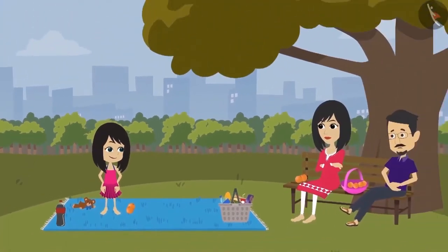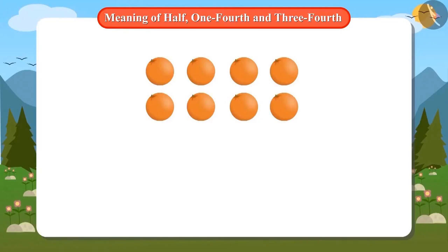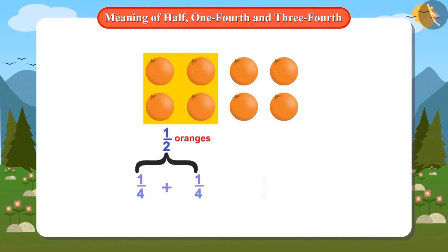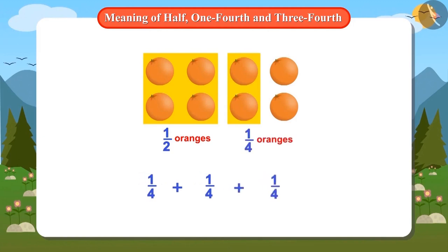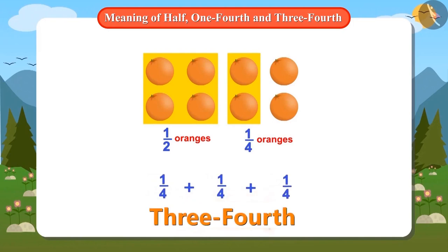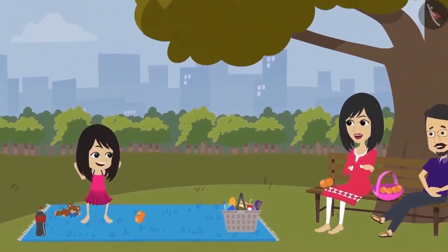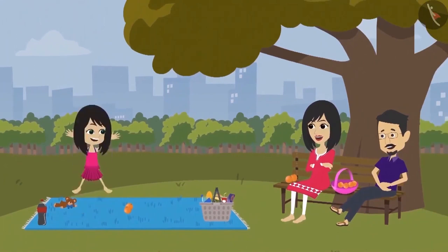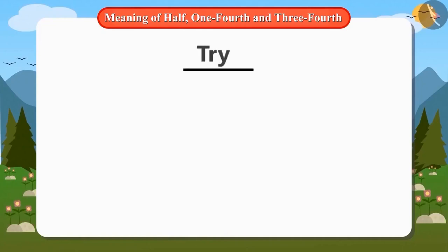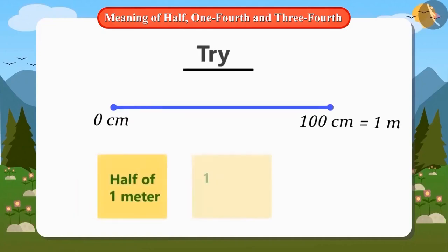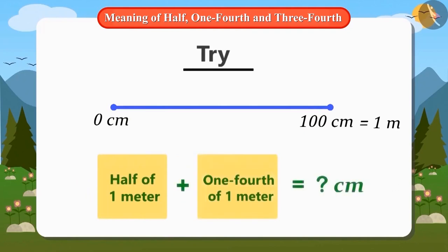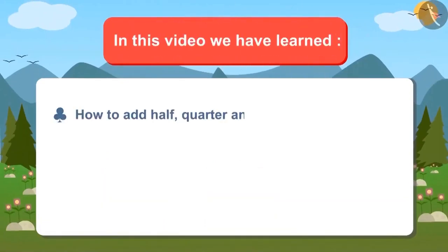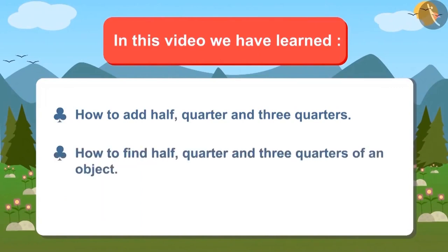Six oranges will be given to Neha's mummy and papa, so Neha will get two oranges. Now, how much of the total oranges did mummy and papa get? We gave papa half of the total oranges. If you divide this half also in half, you get two quarters. Mummy already has a quarter of the total oranges, so mummy and papa have three-quarters together. In this video we have learned how to add half, quarter, and three-quarters, and how to find half, quarter, and three-quarters of an object.